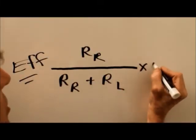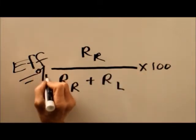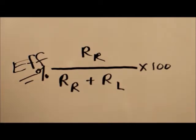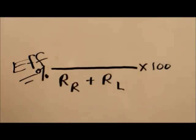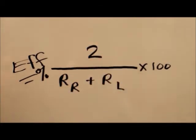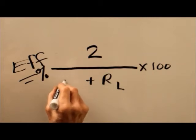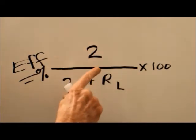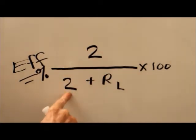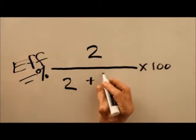That is going to give you the efficiency of your antenna as a ratio. If you want to get it as a percentage, you would have to multiply it by 100. Well, I've already given you the values. Radiation resistance, two ohms. Two ohms for your radiation resistance.